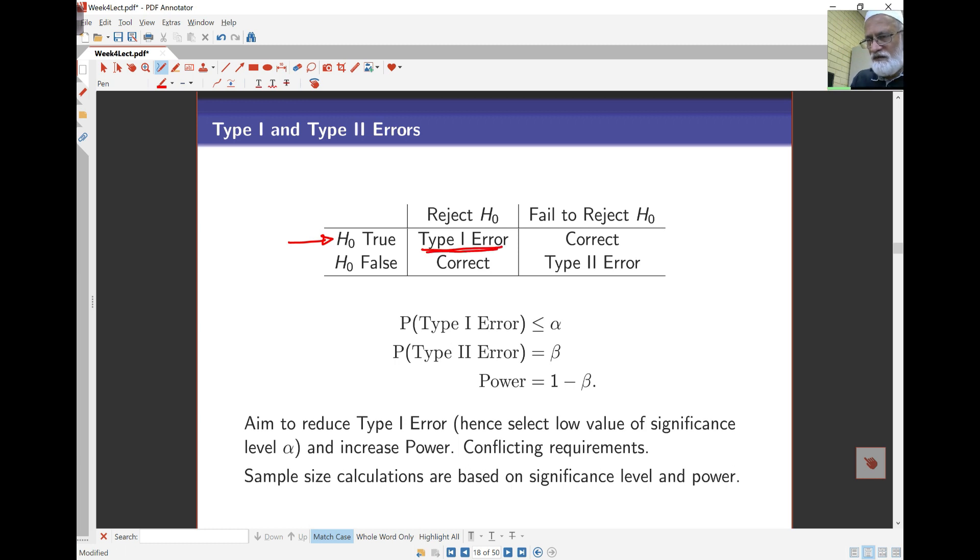If H₀ is true and we fail to reject H₀, we made a correct decision. Likewise, if H₀ is false and we reject H₀, our decision is correct. But if when H₀ is false we fail to reject it, we made another error—this is called a Type II error.